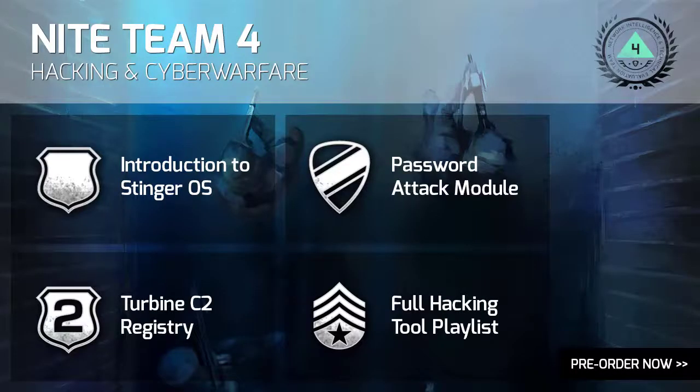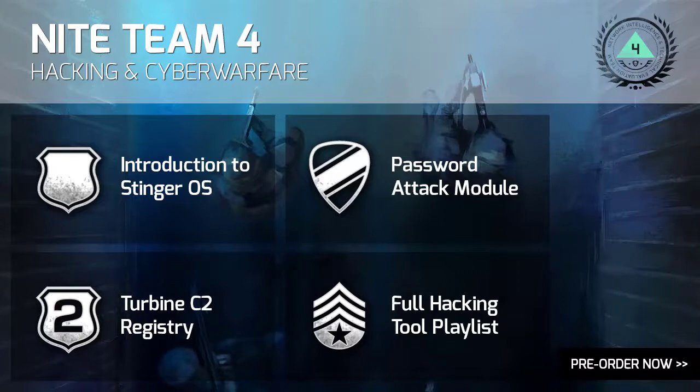You can find more 1904 tutorials here, including an intro to the Stinger OS, a look into the password attack module, and the Turbine C2 Registry. You can also find a full playlist of hacking tools currently available in the game. You can pre-order 1904 by clicking on the bottom right of the screen. Community links to our Discord server and dedicated forums can be found in the description below.